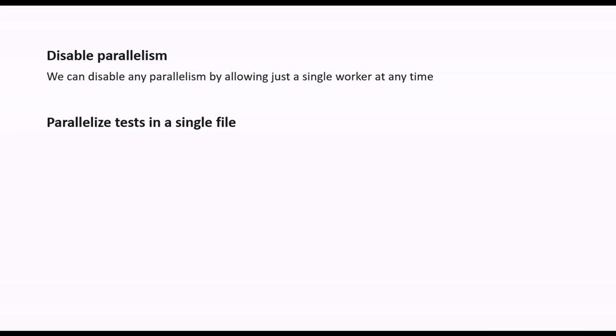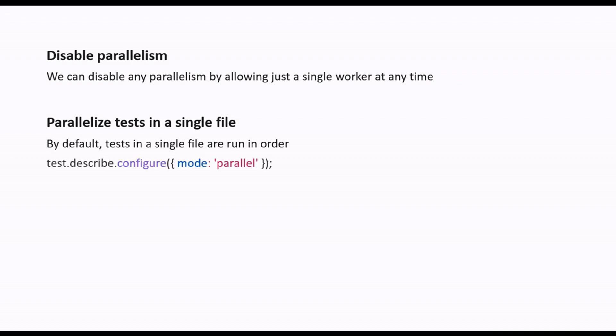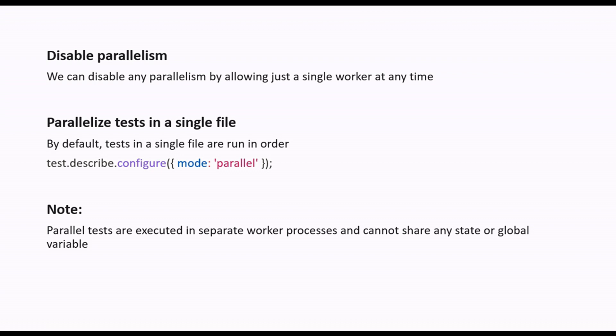How do we run parallel tests in a single file? By default, tests in a single file run in order. But we can make some configuration to run tests in a single file in parallel using test.describe.configure with mode equal to parallel. Within this configuration, however many tests we have in the describe block, all those tests will run in parallel. Parallel tests are executed in a separate worker process and cannot share any state or global variables among them.